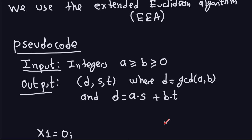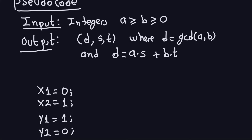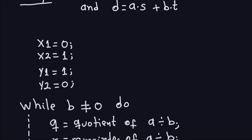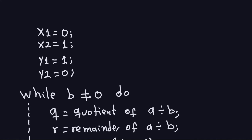The algorithm starts by initializing four variables: X1, X2, Y1, and Y2. X1 is zero, X2 is one, Y1 is one, and Y2 is zero. Then we're going to do a while loop. This algorithm is basically going over the Euclidean repeated divisions and solving for the remainder — that's what's going on here.